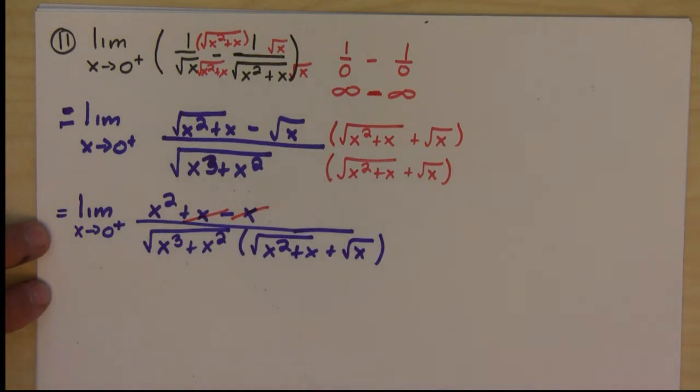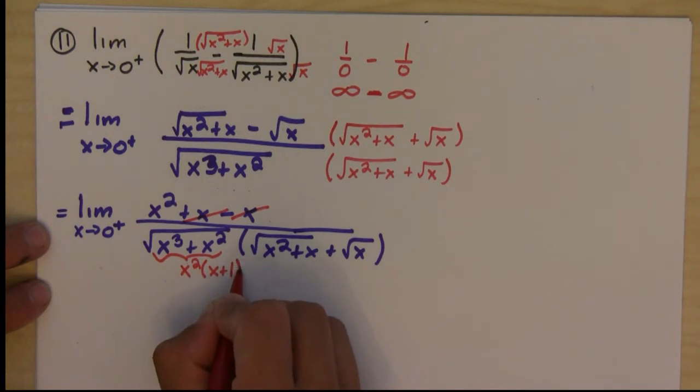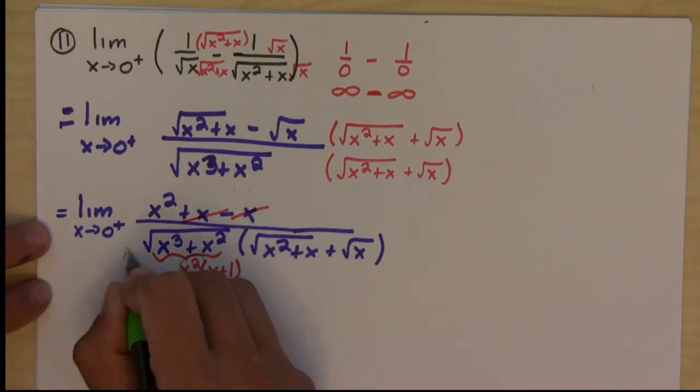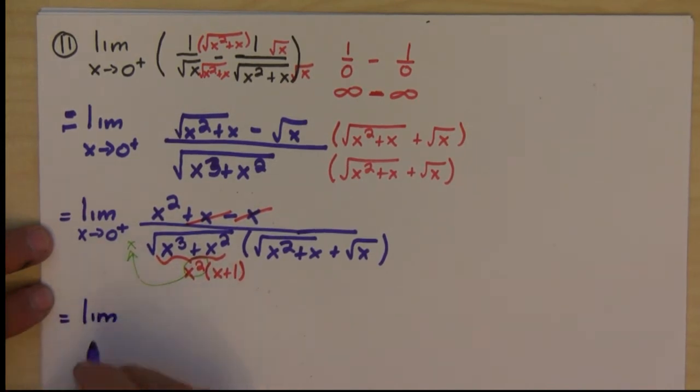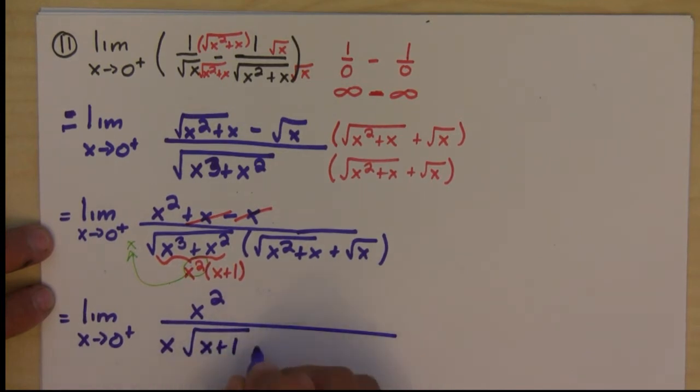Not so obviously, though, notice that if I factor out an x squared, I would get this. And actually, I can take out this x squared outside of the square root as an x. If I do that, I'm going to have x squared over x square root of x plus 1 times the square root of x squared plus x plus square root of x. So one of these x's is going to cancel with this one.